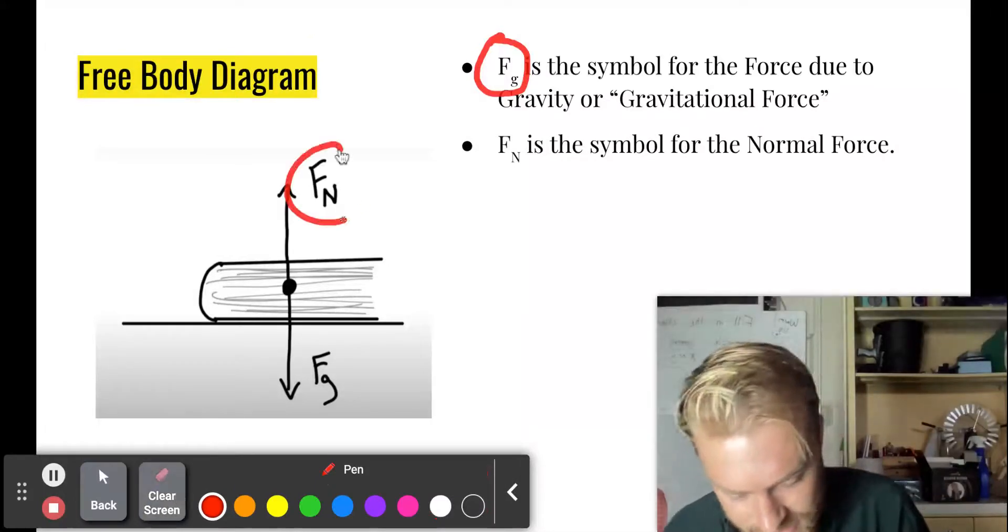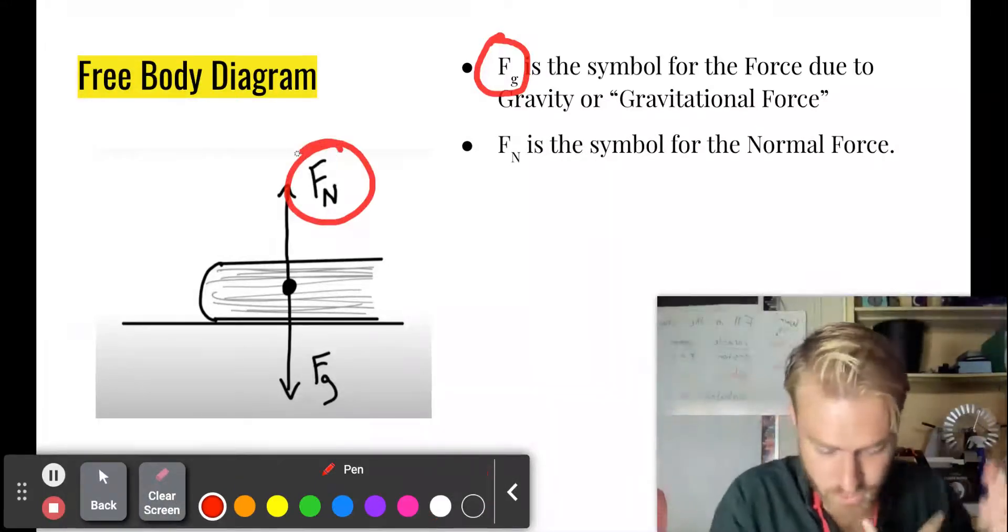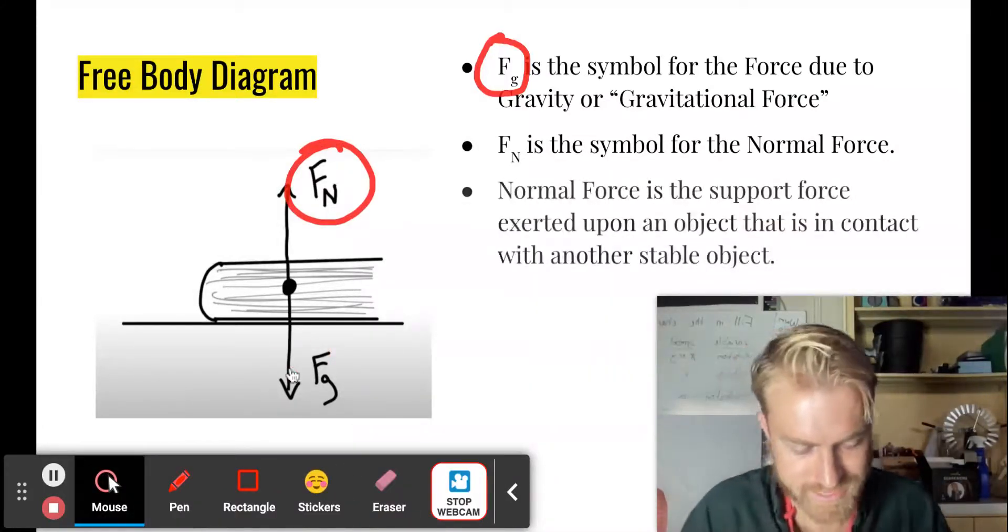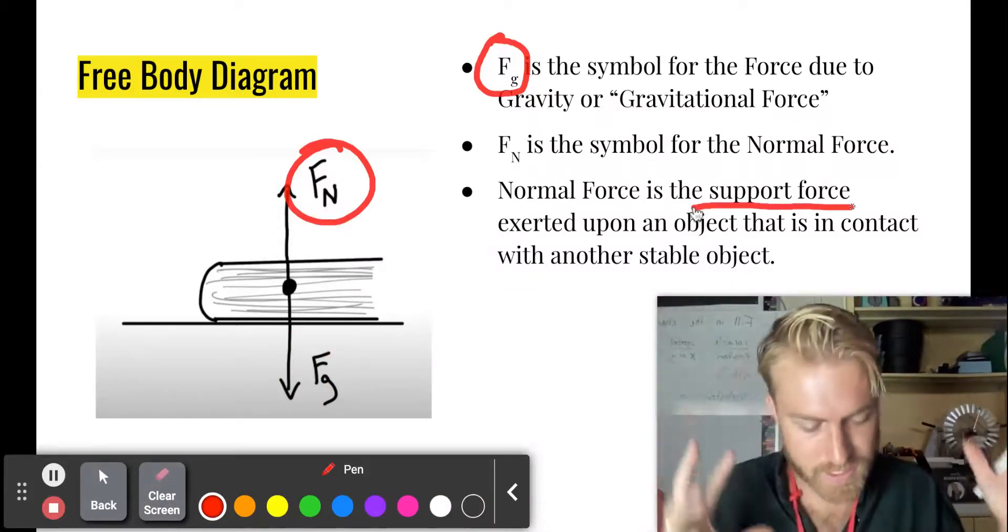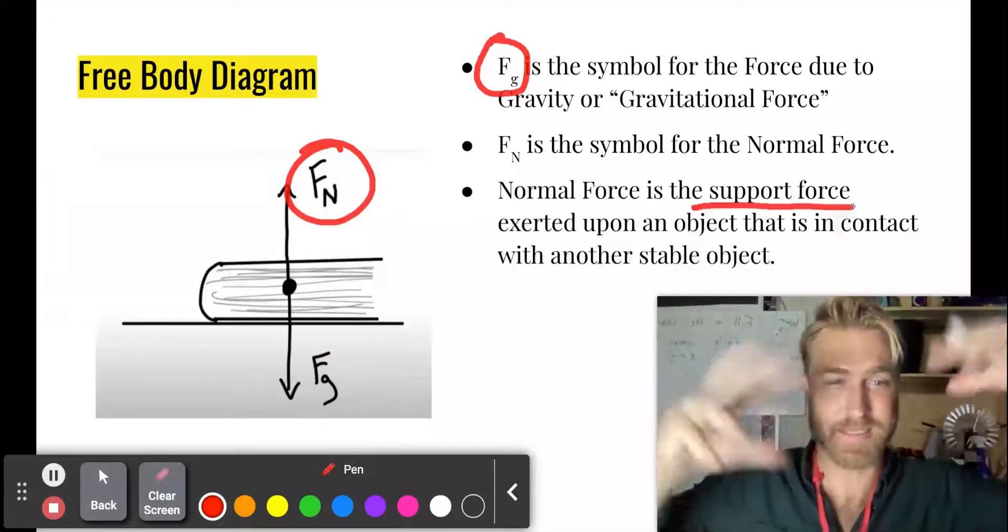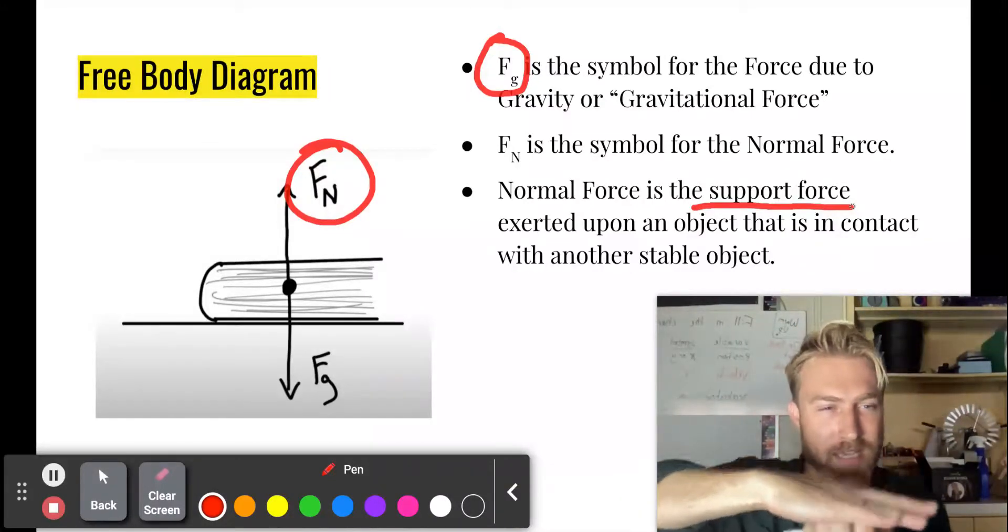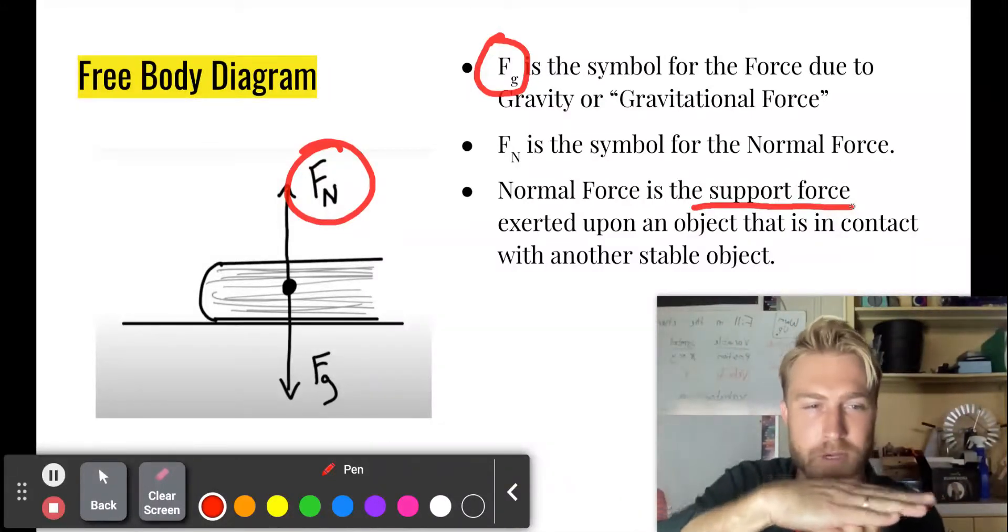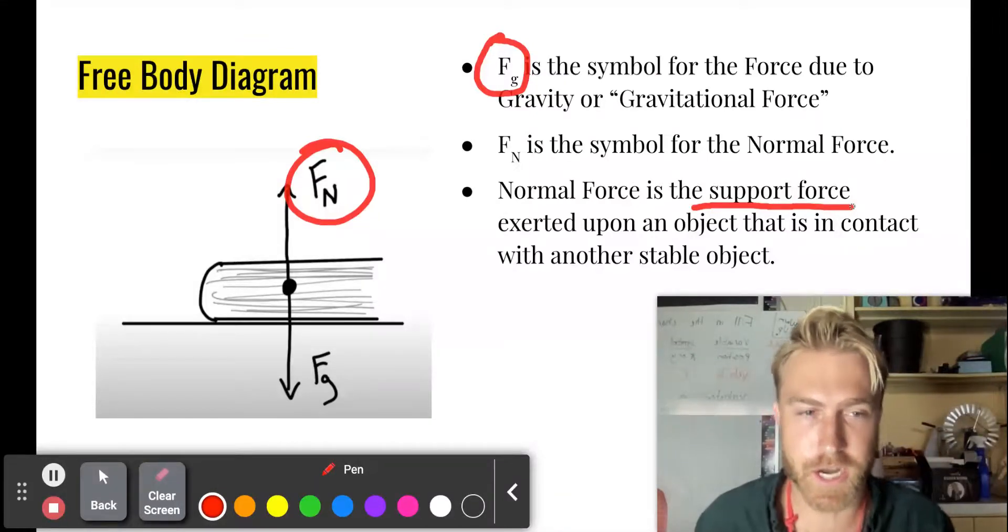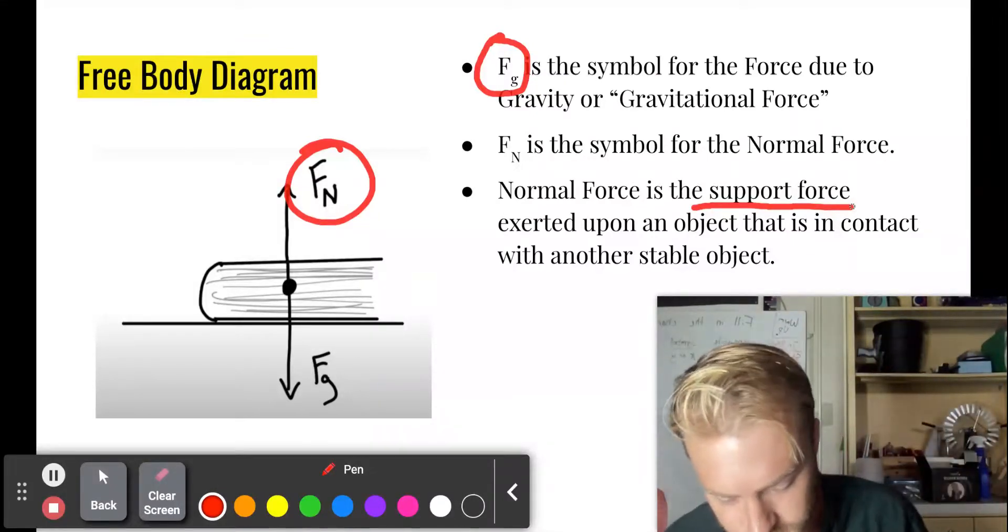F N, this guy, that's the symbol for the normal force. And the normal force, that's that support force exerted upon an object that is in contact with another stable object. So the support force, like a table or anything, like right now, if you're sitting in a chair, that chair is applying a normal force to you.